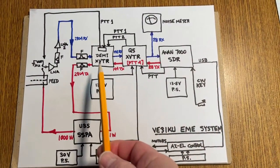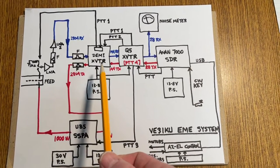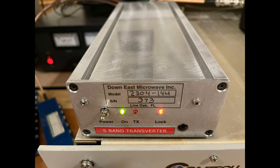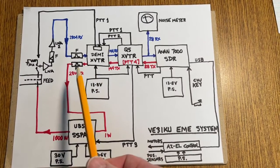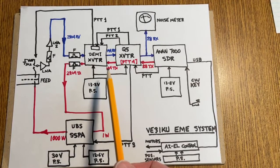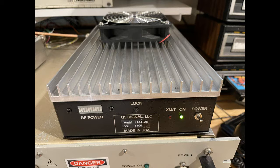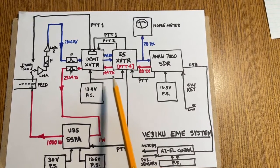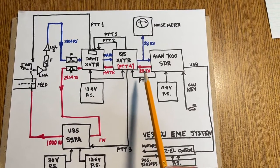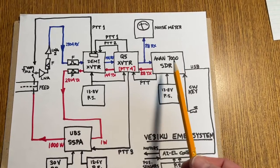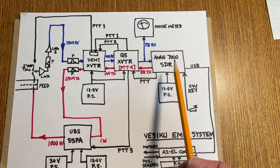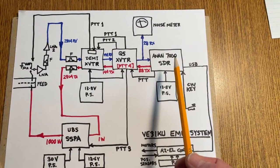There is a Downeast Microwave transverter, 2304 MHz to 144 MHz. There is a second transverter made by Q5 Signal, which is a 144 MHz to 28 MHz transverter. And then there is an HF radio, an SDR ANAN 7000 DLE Mark II.